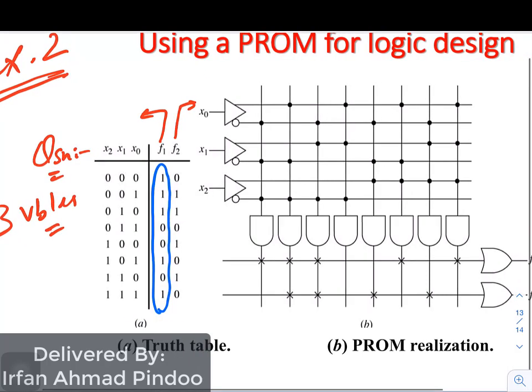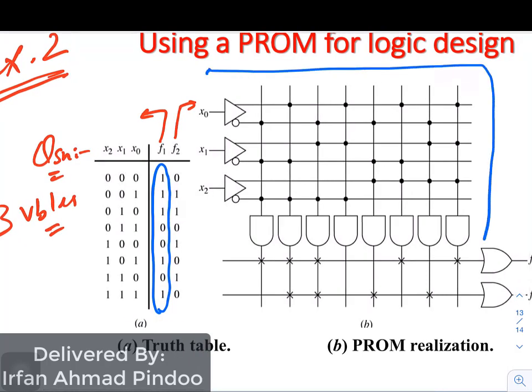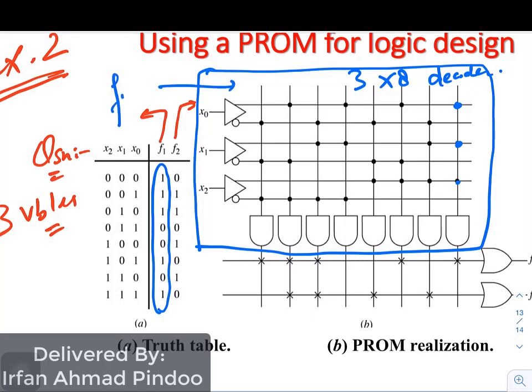Now you can see here if we look at this particular portion, this is nothing but a decoder. This portion is nothing but a 3 cross 8 decoder and these points that you can see here they are all fixed, you cannot program it. Like we have seen in the example number 1, it follows a pattern like this: 0 0 0, 0 0 1, 0 1 0, up to 1 1 1. So all these connections are fixed.